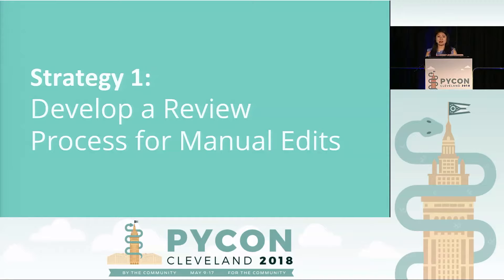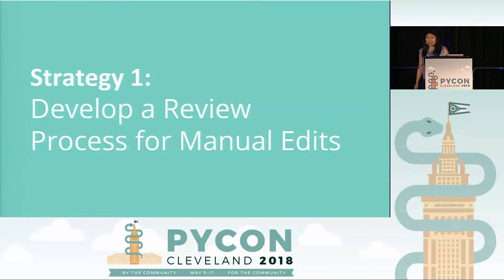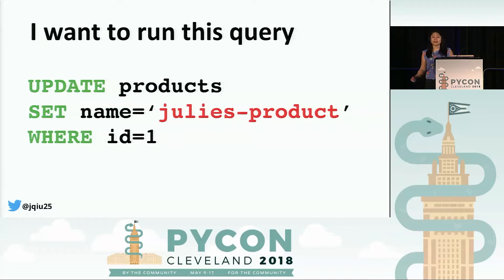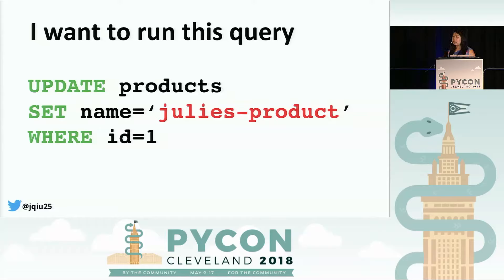The first strategy is relatively simple — it doesn't require any new code to be written or any infrastructure to be built. It's simply developing a process for making sure we get spot checked when we make edits to production. What we started doing at my company is maintaining a Google spreadsheet to record manual SQL queries against production. This spreadsheet allowed us to collaborate and review each other's queries before they were executed, and it gave us a checklist for what we needed to do before running a query.